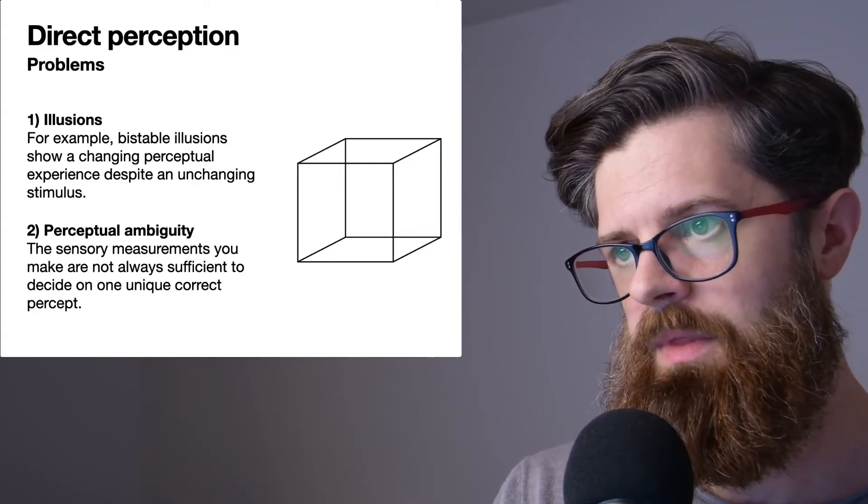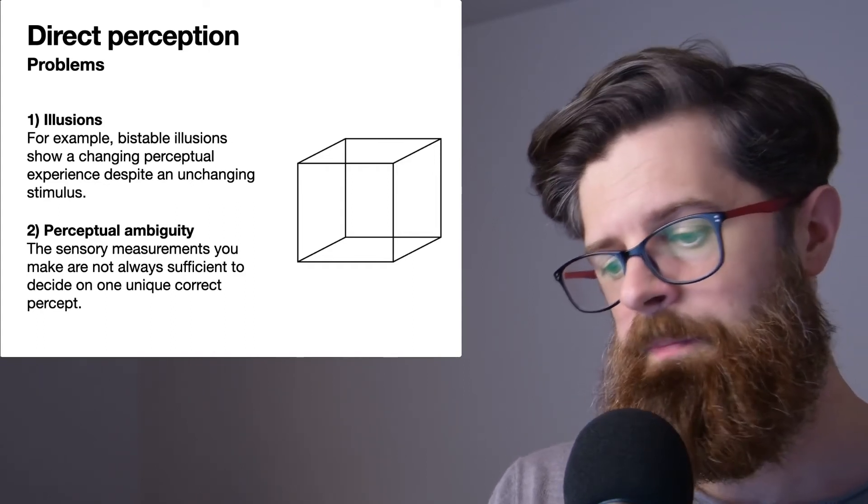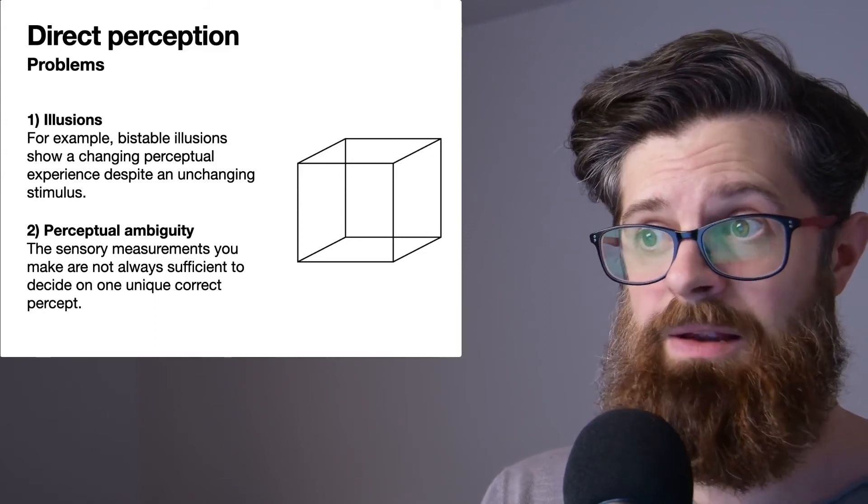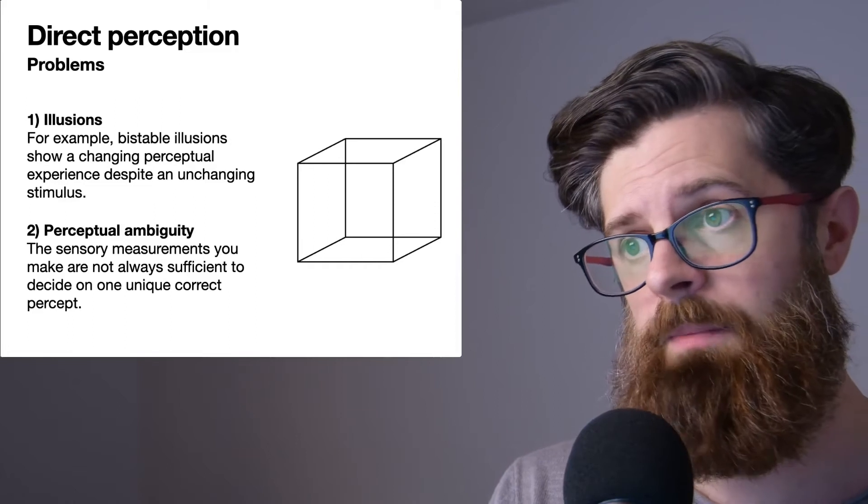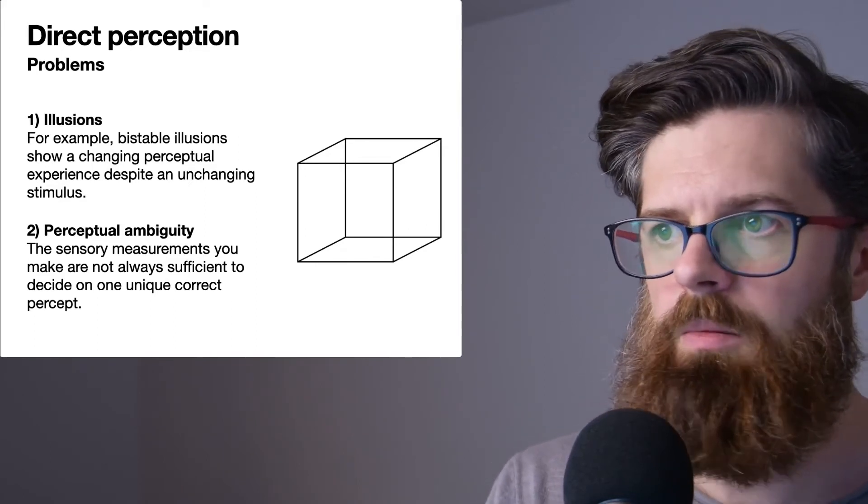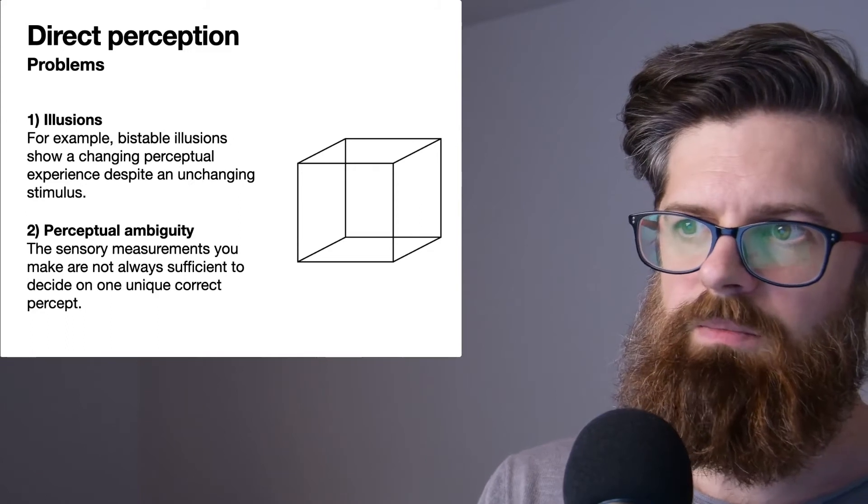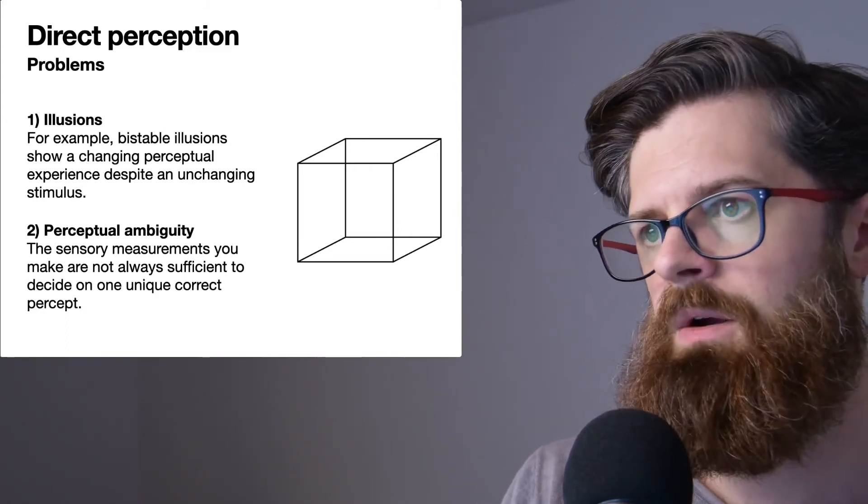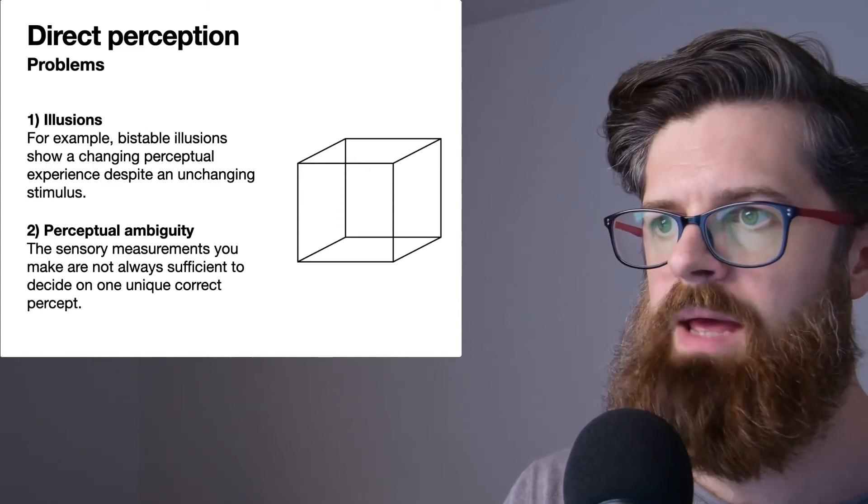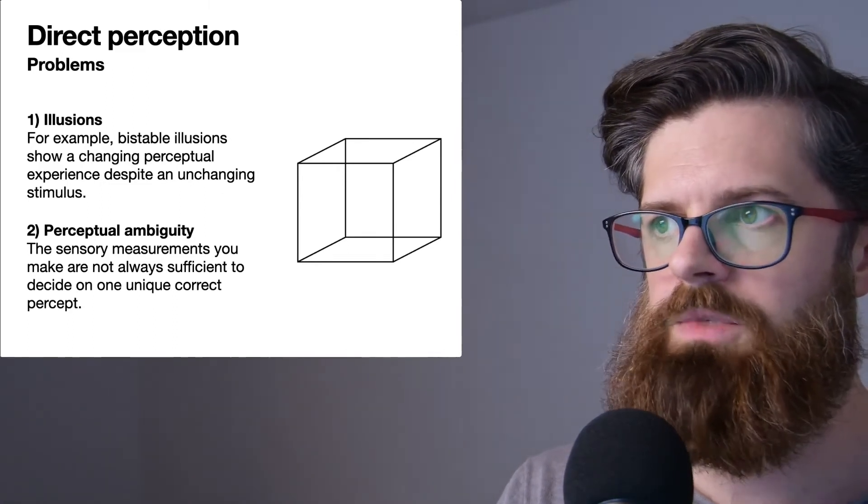Another kind of issue, not entirely unrelated, is that you can have perceptual ambiguity. It is not always the case that the sensory measurements you make of the world are sufficient to really tell you exactly what's going on. For example, if you're trying to communicate with a member of your household, they might shout something from a couple of rooms away, and it's quite hard to hear. Maybe the washing machine is on, so maybe they said one thing, but maybe they said another thing. It's hard to square this idea of being uncertain about the state of the world if we are supposed to directly experience it.